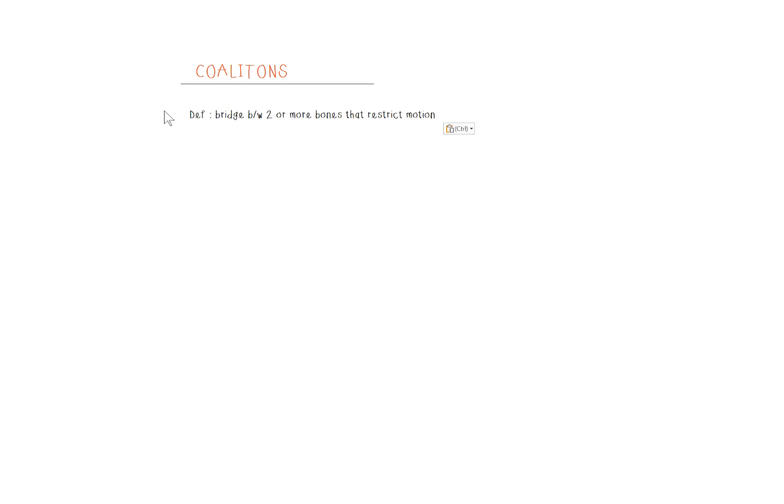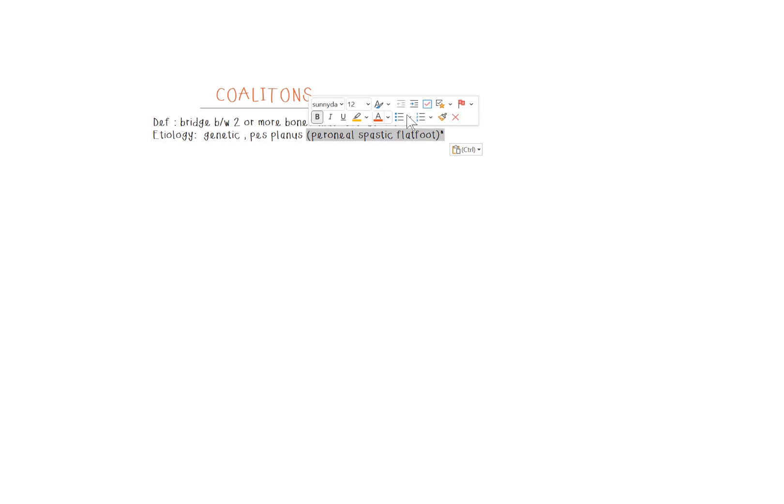Today's topic is coalition. The definition is two or more bones forming a bridge that restricts motion. Think of this commonly found in flat feet or pes planus. There's also a genetic component, but the biggest buzzword is peroneal spastic flat foot. If you see that on an exam, you want to work out for a coalition.